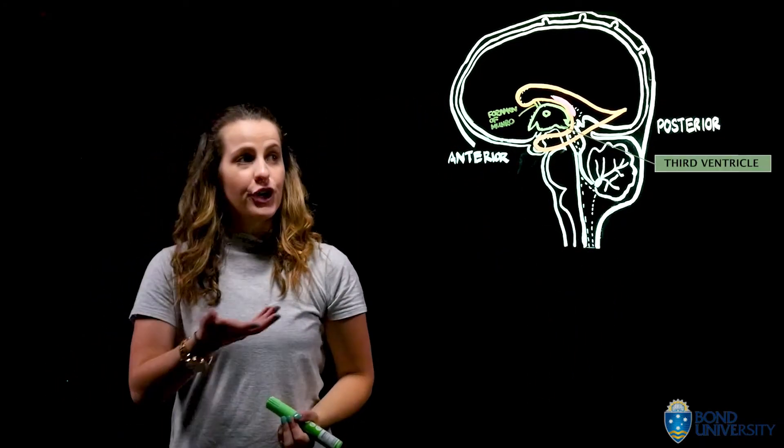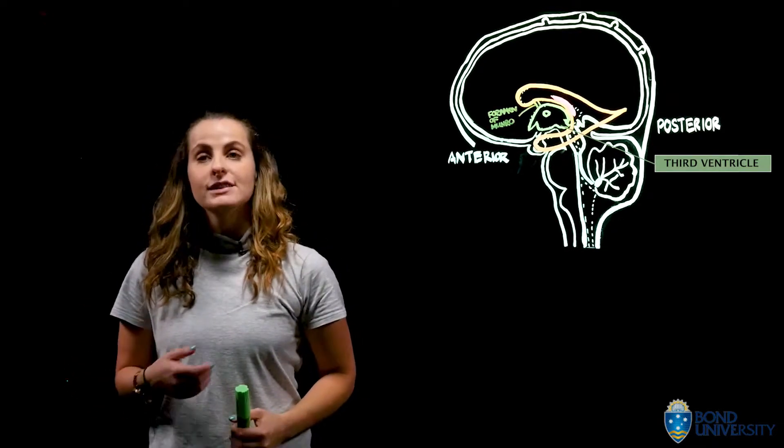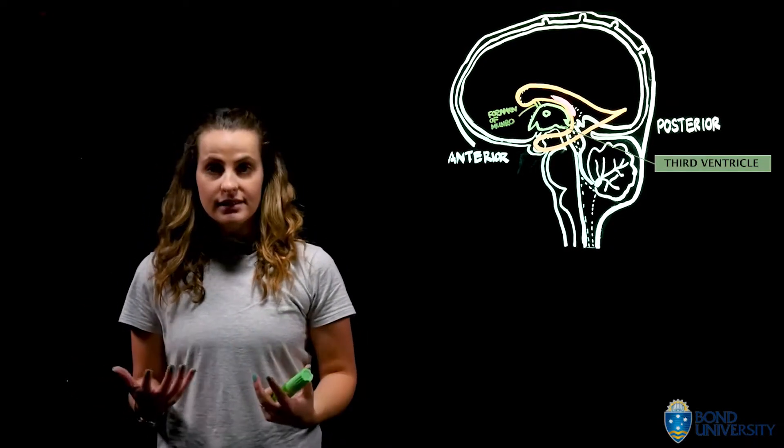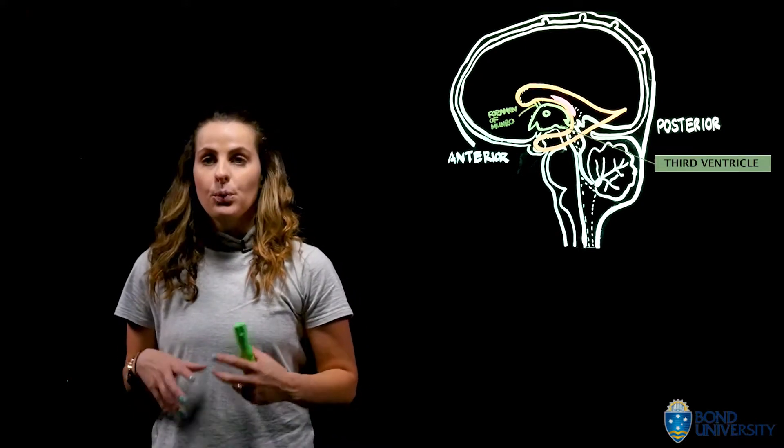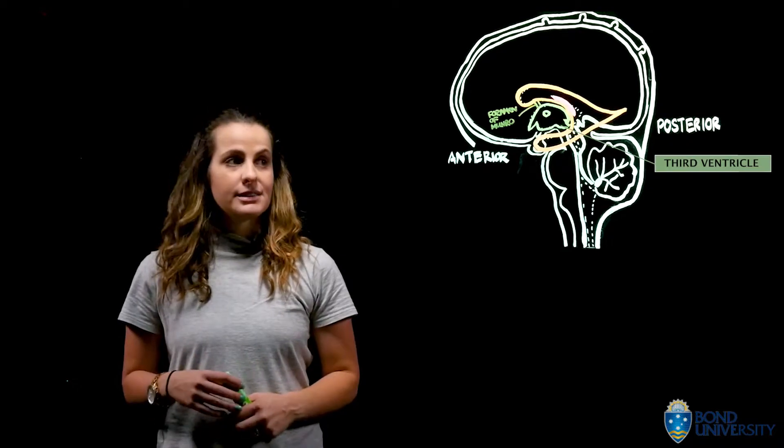In my opinion, the third ventricle looks a bit like the head of a bird. The third ventricle is located within the diencephalon, which is going to be within and in relation to the thalamus and the hypothalamus.